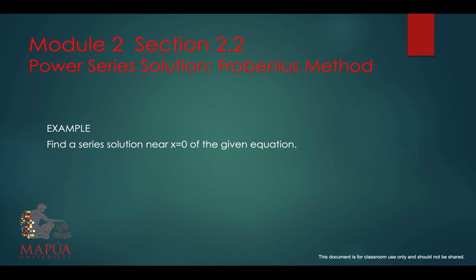To find a series solution near x equals 0 of the given equation, this is a second-order differential equation. x squared is a coefficient for y double prime, minus x for y prime, and then 1 for y.